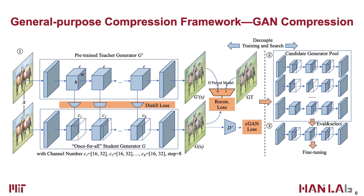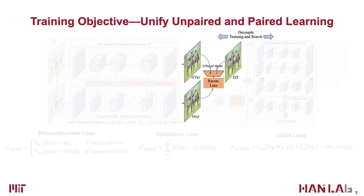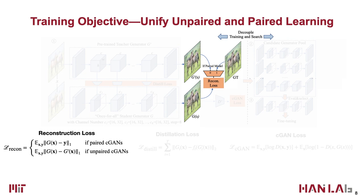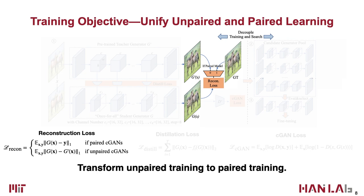In our training protocol, we first unify the unpaired and paired training. For the unpaired model, given the original teacher generator GT, we can view the original generator's output as our ground truth and train our compressed generator G with a paired learning objective. For the paired model, we directly use the ground truth target images. Thus, we gather reconstruction losses and transform the unpaired training to paired training.